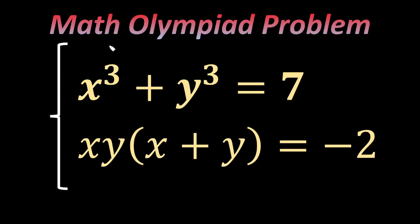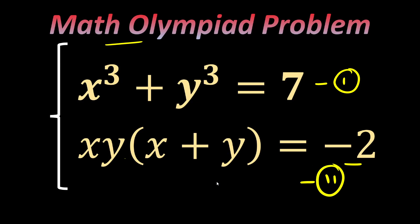In this video we will solve a very nice math olympiad problem. The question is given in the form of two equations: x³ + y³ = 7 (let's call this the first equation) and xy(x + y) = -2 (let's call this the second equation). We have to solve them simultaneously and find the values of x and y.